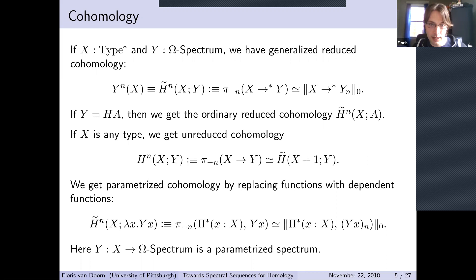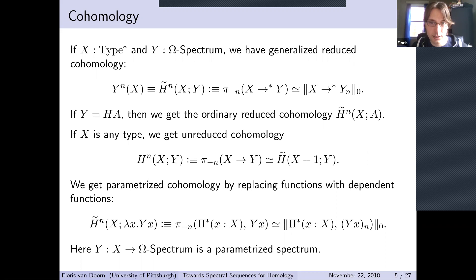Given a pointed type X and an omega spectrum Y, we define generalized cohomology H^n(X; Y) as the (−n)th homotopy group of the pointed maps from X to Y, which works out to be the zero-truncation of pointed maps from X to Yₙ. If Y is the Eilenberg–MacLane spectrum, we get ordinary reduced cohomology with coefficients in an abelian group. For an unpointed type X, we define unreduced cohomology using all maps (not necessarily pointed). In HoTT, we can also easily define parameterized cohomology using dependent sections.